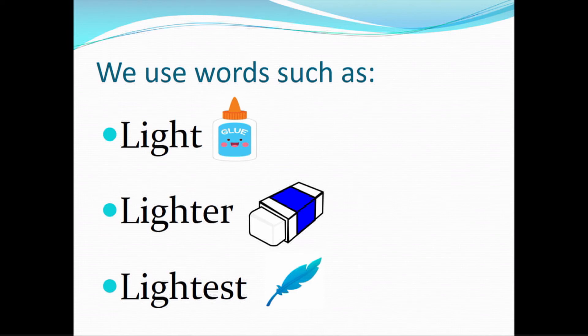Here are the words we use to describe how light something is: light, lighter, and lightest. The bottle of glue is light, the eraser is lighter, but the feather is the lightest. You can try this at home if you have these three objects — you can find out which one is light, lighter, or the lightest.